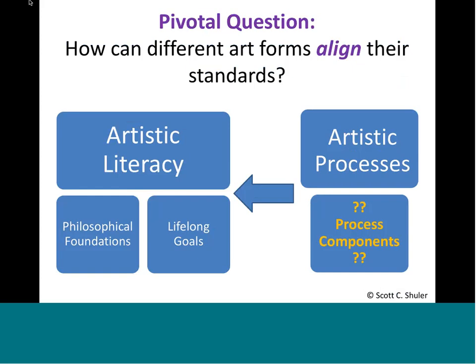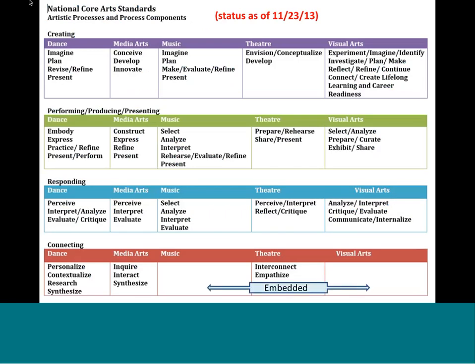We talked about having the same process components in the different art forms. There was a time in our development process where that was true, and it broke apart. I'm showing you where we were in November — about six or seven months before the June release date. We were in very different places. Each arts form had picked different verbs for their process components. In the creating process it ranged from 'envision, conceptualize, and develop' in theater to visual arts having a whole bunch of words. Visual arts and music agreed that connecting is embedded into everything we do and didn't need separate standards.